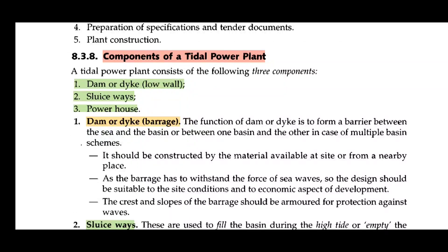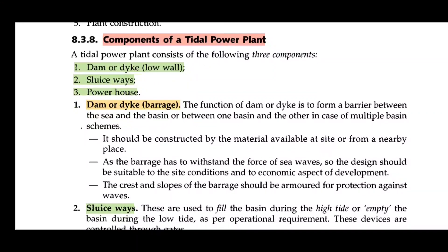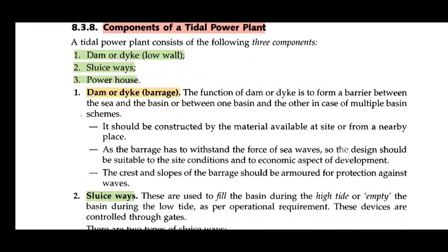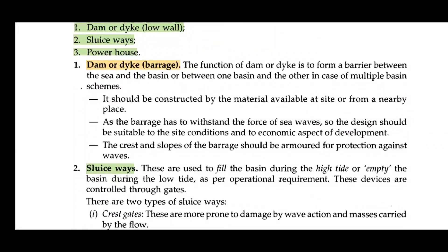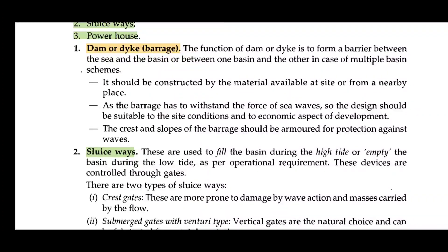These are the components of a tidal power plant. A tidal power plant consists of the following three components. The first component is a Dam or Dyke. The function of a Dam or Dyke is to form a barrier between the sea and the basin.